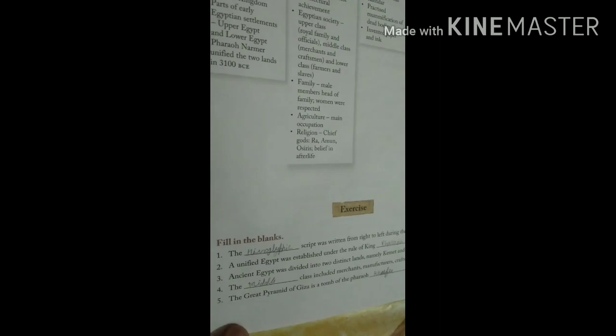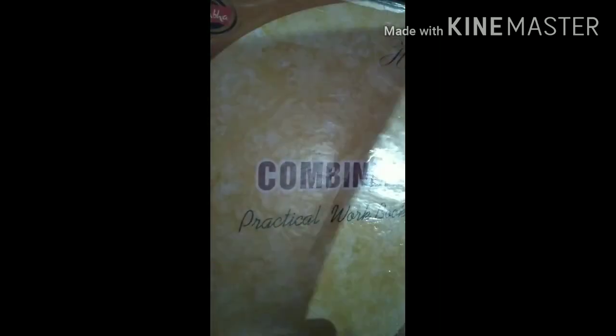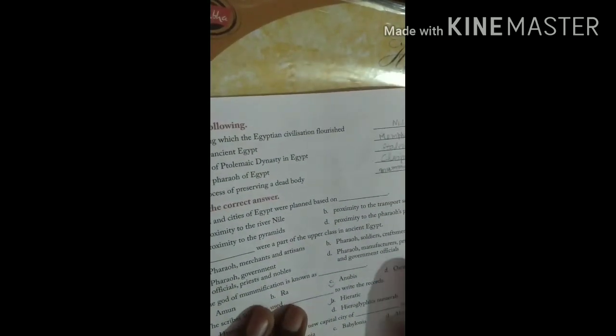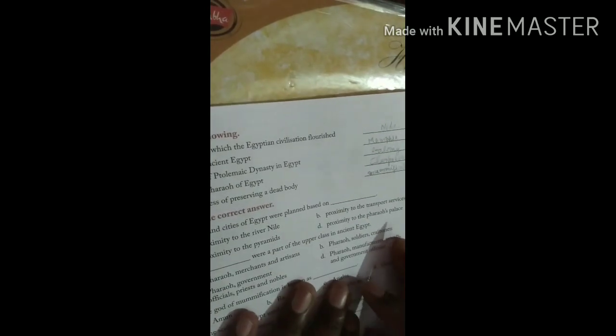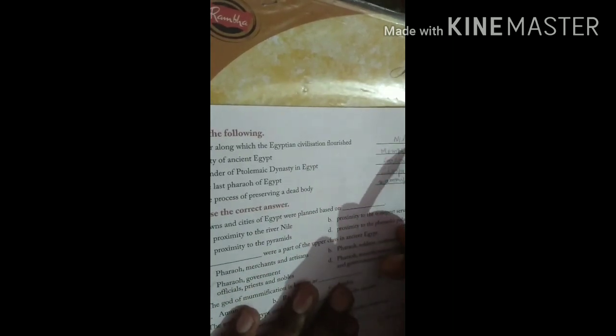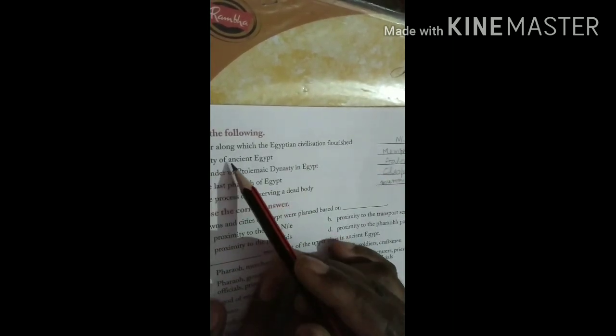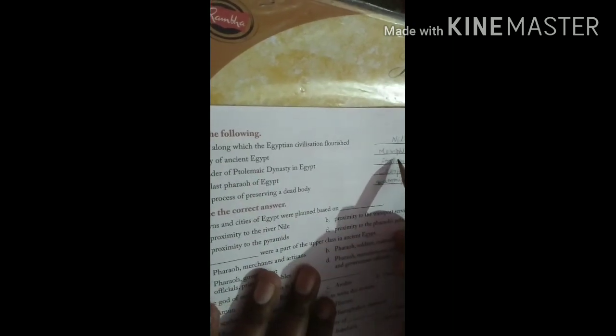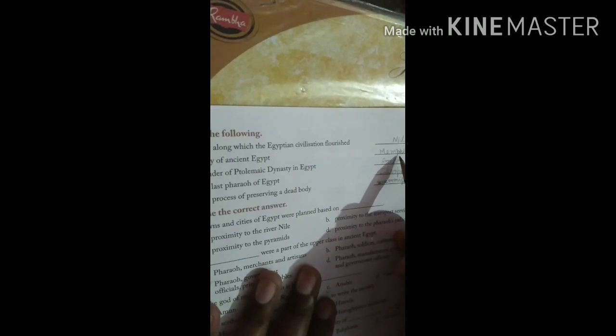Now fifth, the Great Pyramid of Giza is a tomb of the Pharaoh Khufu (K-H-U-F-U). Now come to the next: Name the following. The river along which the Egyptian civilization flourished, that is Nile River.